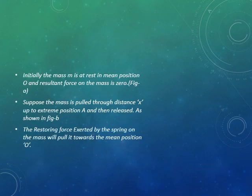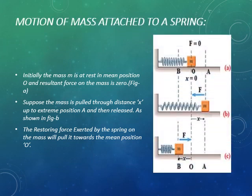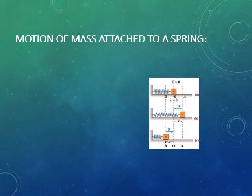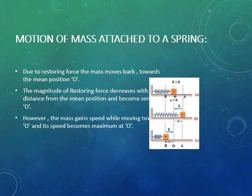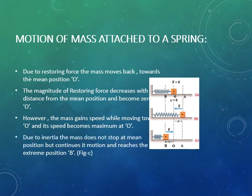Initially the mass m is at rest at mean position O and the resultant force on the mass is zero, as shown in figure a. Suppose the mass is pulled through distance x to extreme position A and then released, as shown in figure b. The restoring force exerted by the spring on the mass will pull it toward the mean position O. Due to restoring force the mass moves back toward mean position O. The magnitude of restoring force decreases with distance from the mean position and becomes zero at point O. However, the mass gains speed while moving towards O and its speed becomes maximum at position O. The body does not stop at O but continues its motion towards point B due to inertia.